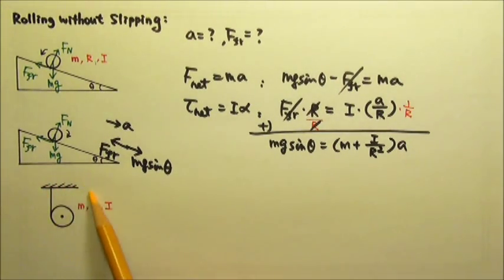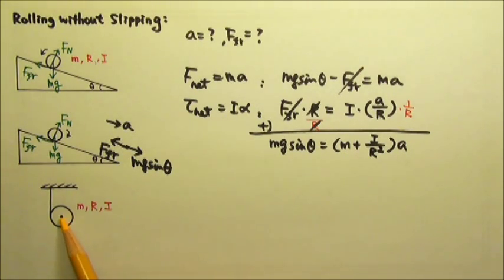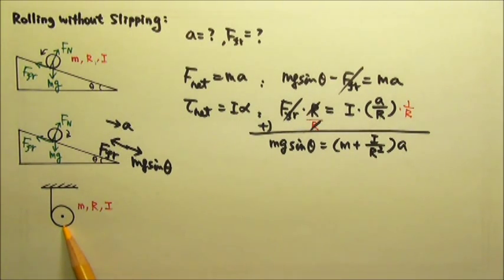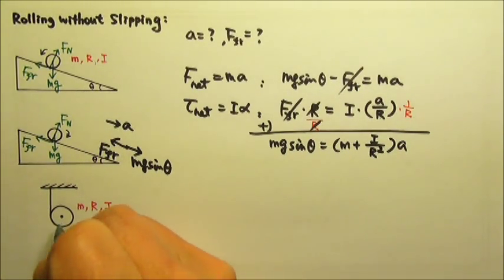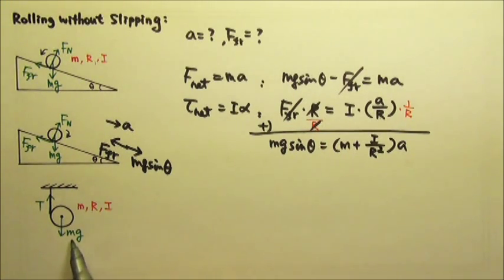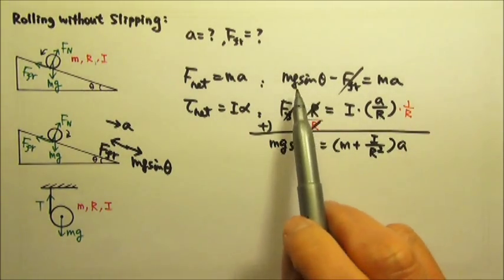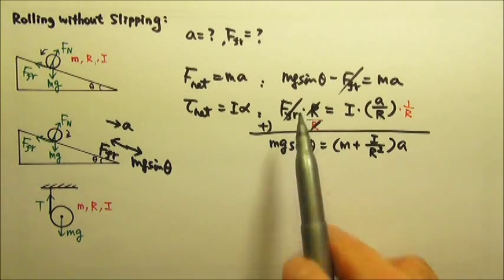We can also have a rolling-without-slipping problem like this: a string is attached to the ceiling and wrapped around an object. If you let go, the object goes down and the string unwinds. If the string does not slip, we have an object rolling without slipping. The force diagram has mg going down and tension going up. So mg minus T equals ma, and the tension provides the torque — everything is just like the incline case, except you have mg instead of mg sinθ, and tension instead of friction.